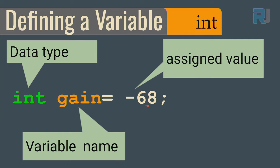Another data type is boolean, used when working with true or false. You type boolean, then the variable name — for example, done — and assign it true. You cannot have values other than true or false. Now let's see how to update a variable. If you have defined a variable called age of type integer with value 32 and want to change it, you simply write the variable name equals the new value, like 26. If the variable is not defined above this line, it will give you an error, because the definition determines the type and must be done first.